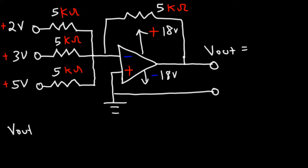So let's begin by writing the formula. The output voltage is negative Rf, times V1 over R1, plus V2 over R2, plus V3 over R3. Now, notice that all of the resistors have the same value.